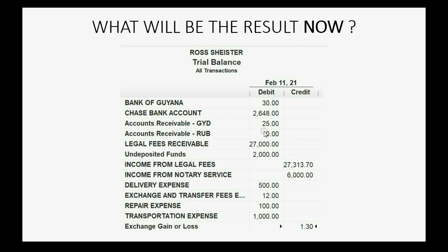After receiving payment on February 15th, we received all of the money for the open invoice, so accounts receivable Guyana should go down to zero. The amount in US dollars — 5,000 units times $0.007 — means we received $35 US dollars into our Guyanese bank account, making the balance of the Bank of Guyana $65. The $10 difference between the $35 received and the $25 on the invoice is a gain, making the net gain increase by $10 to become $11.30.